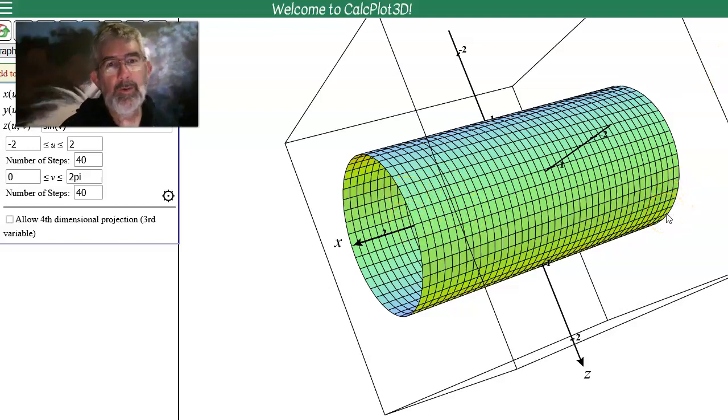I would say that this is an orientable surface because I can define at every point on the surface a normal vector so that as I move around on the surface that normal vector changes in a continuous fashion. It doesn't ever take big jumps.